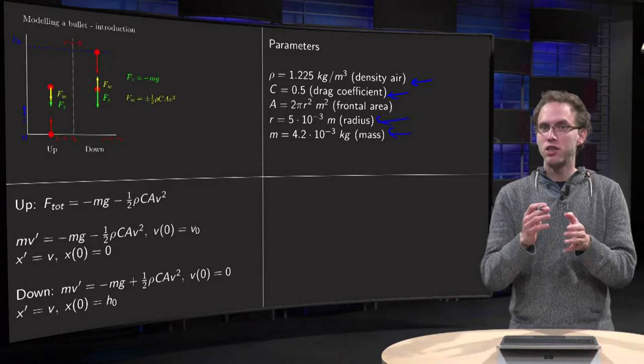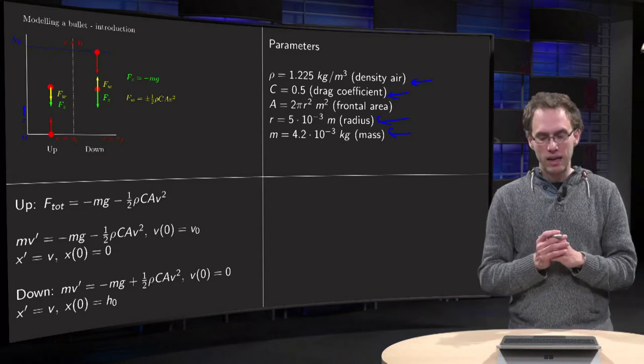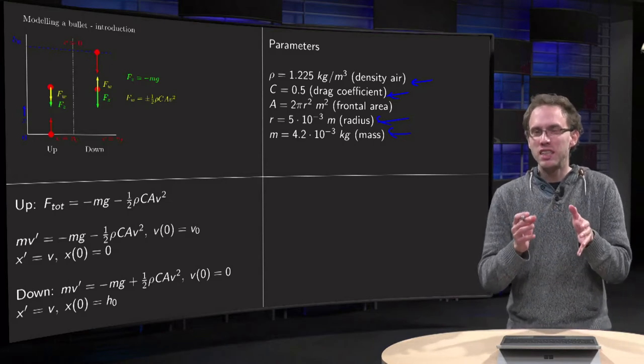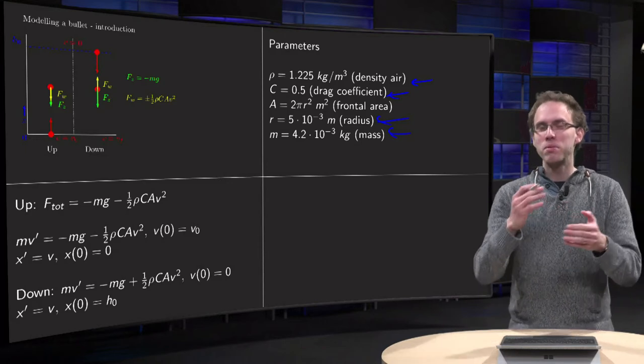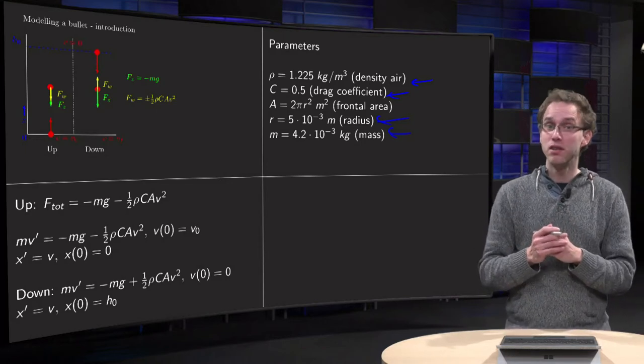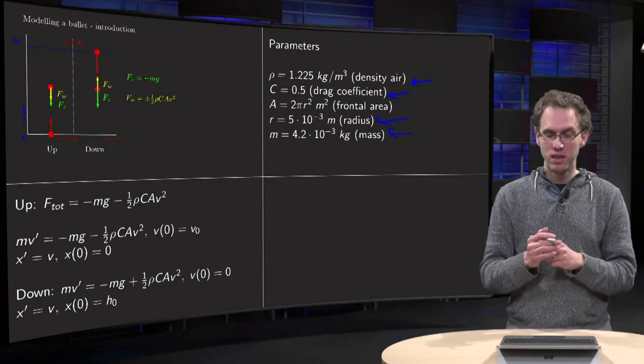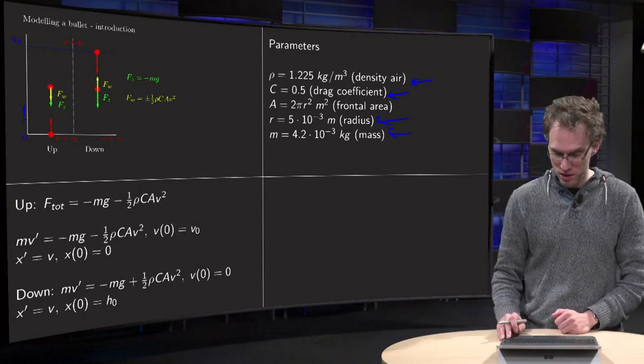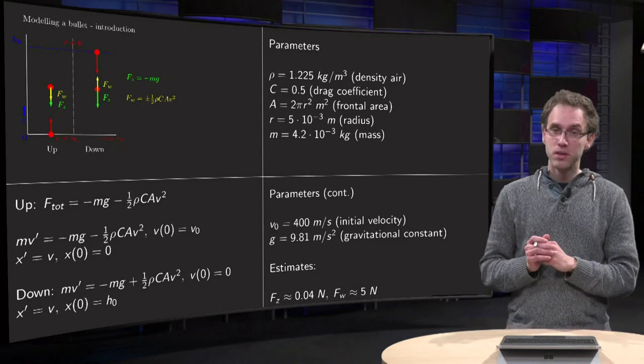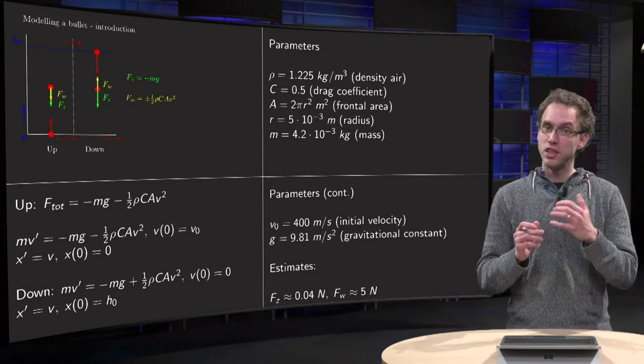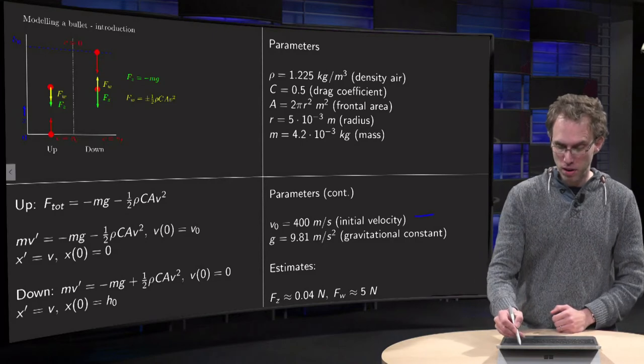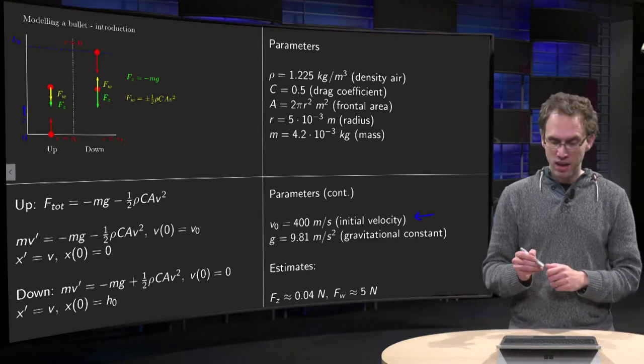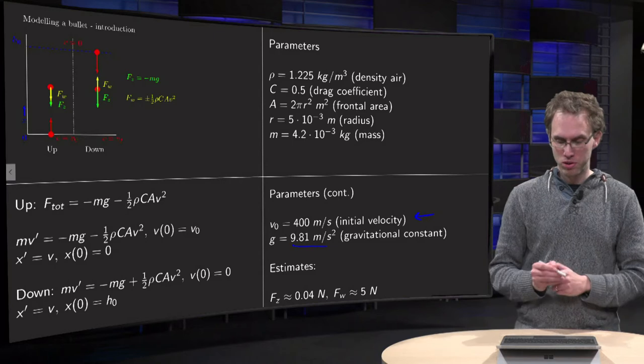So you see there is already some imprecision. In the sense that those parameters can be slightly different, of course, giving you slightly different results. But the orders of magnitude are definitely like this. Now, let me continue. What is the initial velocity of a bullet? You can also look it up. It is about 400 meters per second. And gravitational constant, that is of course a constant.